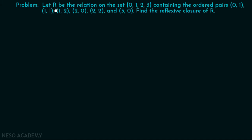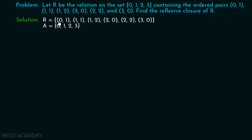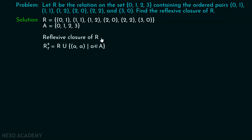You can think of this set as the domain of this relation. So we have a relation R which consists of ordered pairs (0,1), (1,1), (1,2), (2,0), (2,2), (3,0), and we have a set A = {0, 1, 2, 3}. Reflexive closure R⁺ = R ∪ {(a, a) | a ∈ A}. This means that we must include all the ordered pairs of the form (a, a).